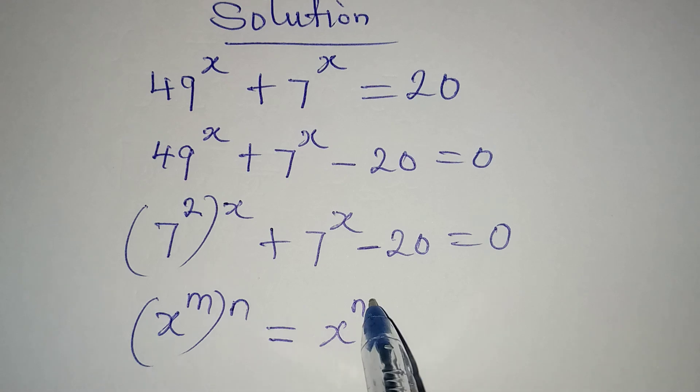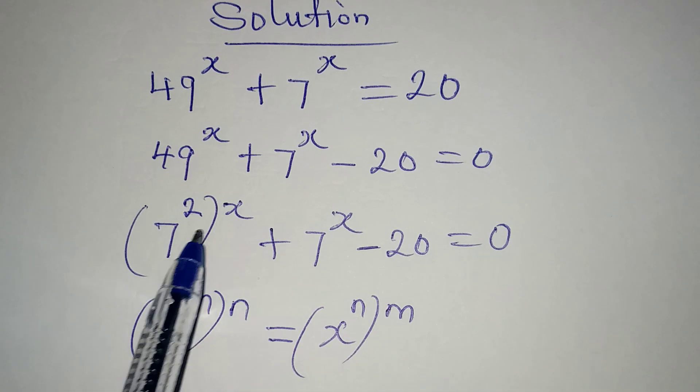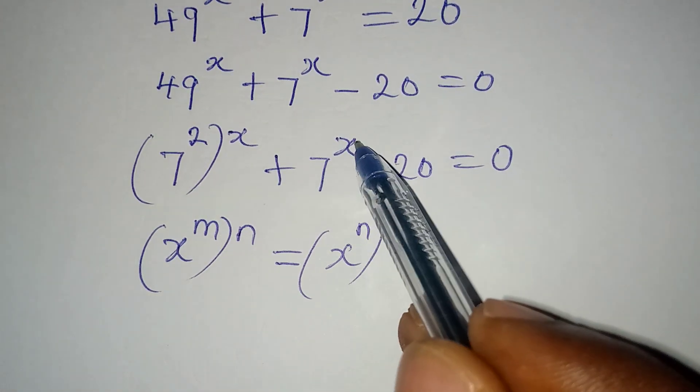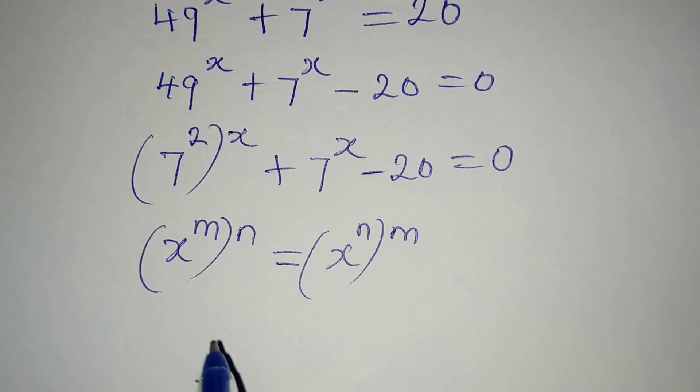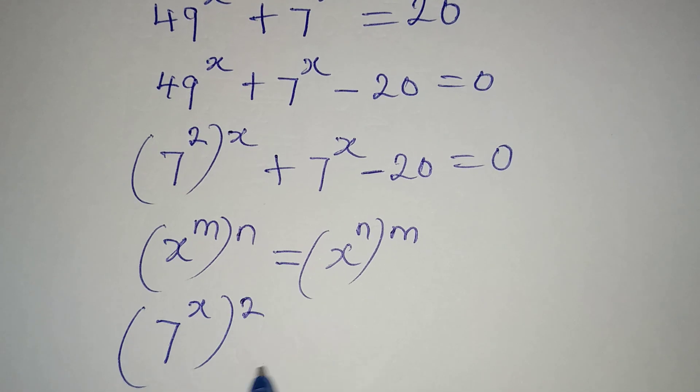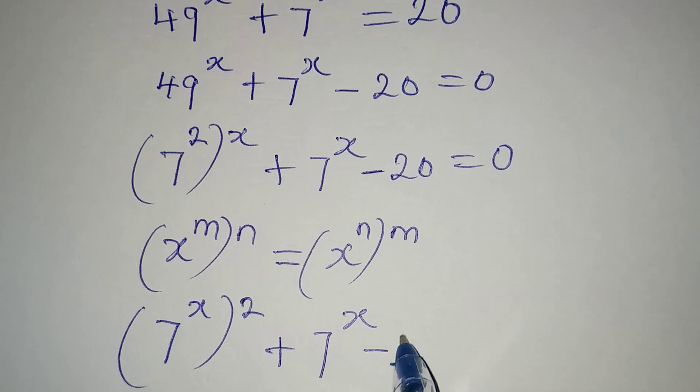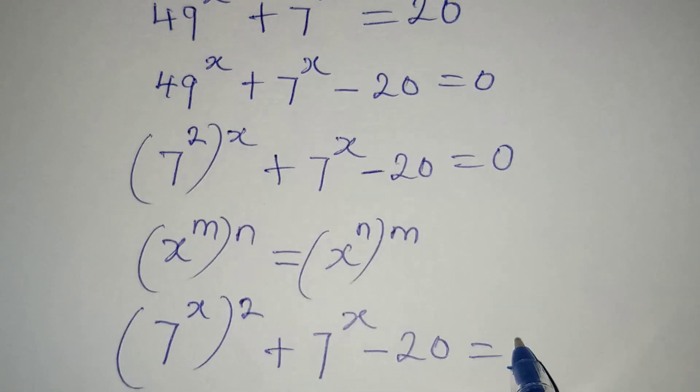So I'm going to do the same thing here and the reason for it is for me to have 7 to the power of x in two places. So here I will have 7 to the power of x then to the power of 2 plus 7 to the power of x minus 20 equals 0.